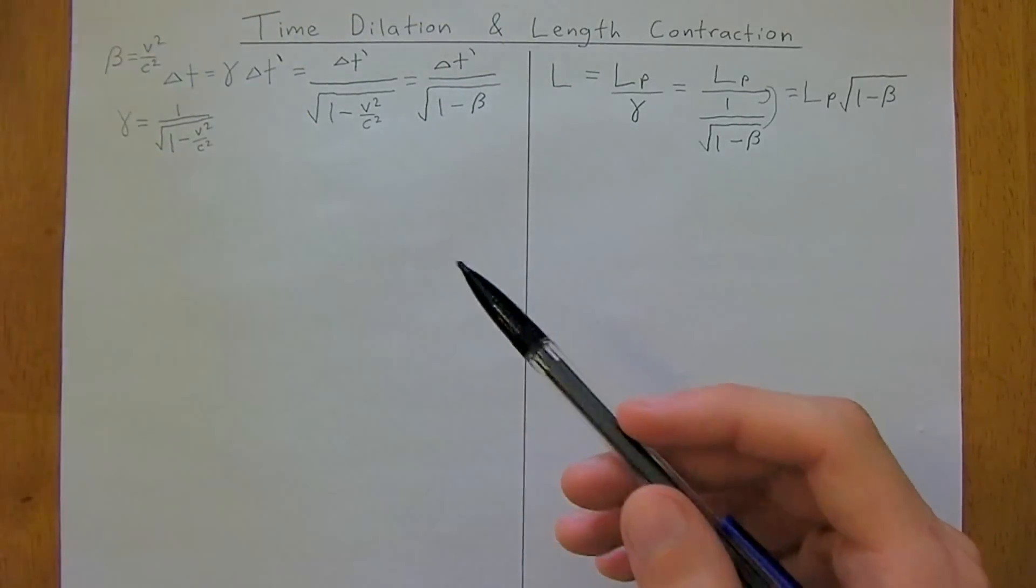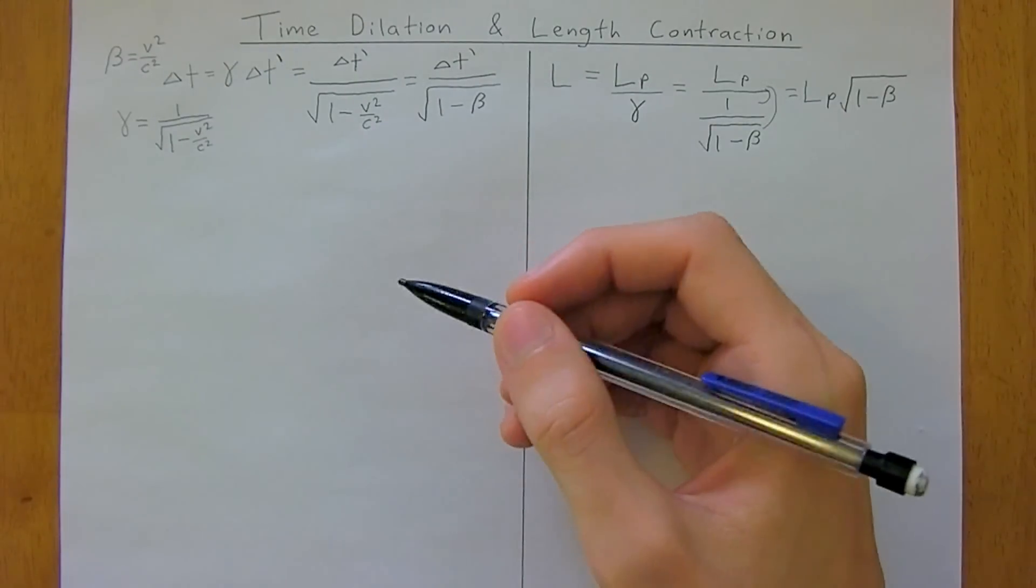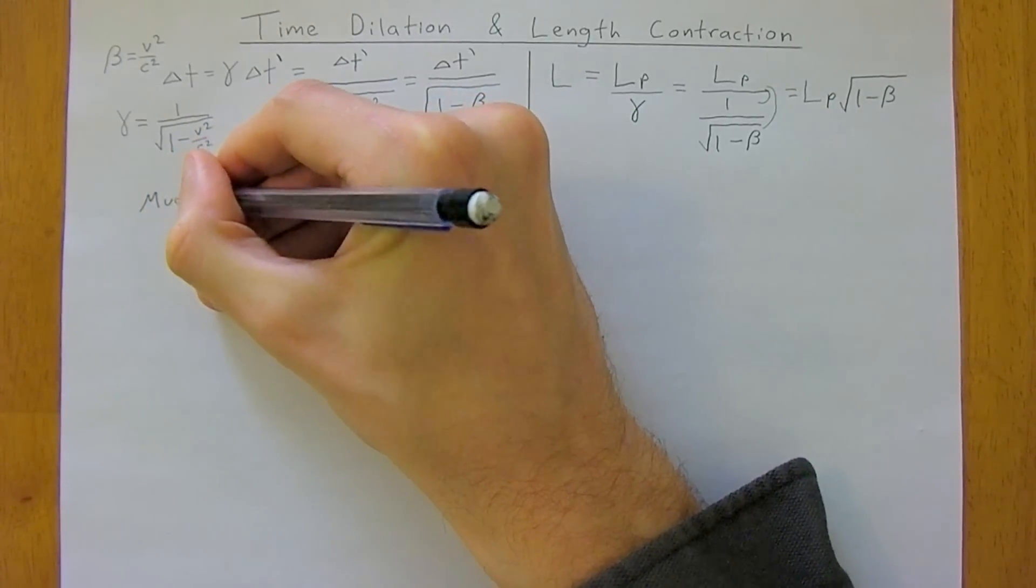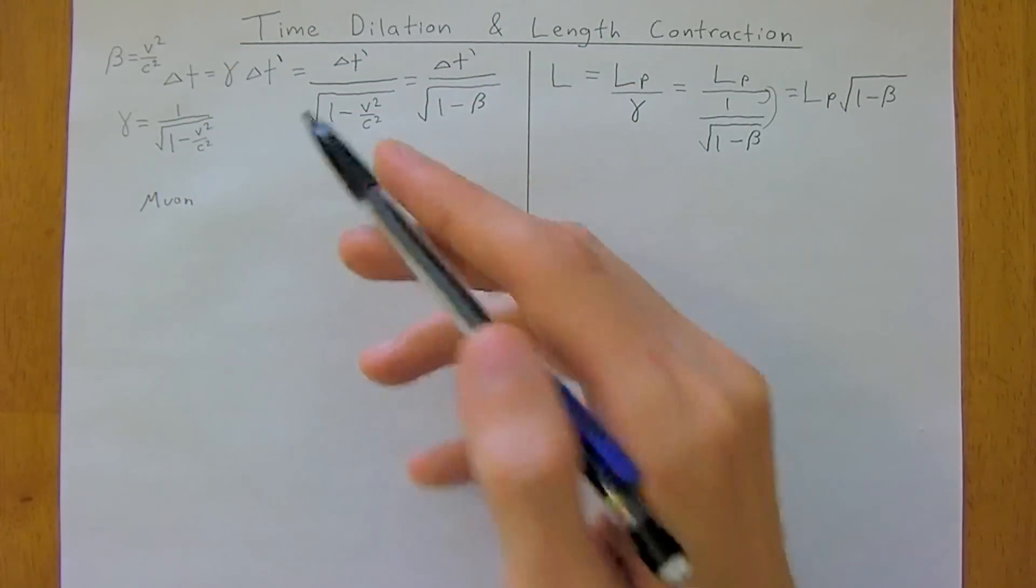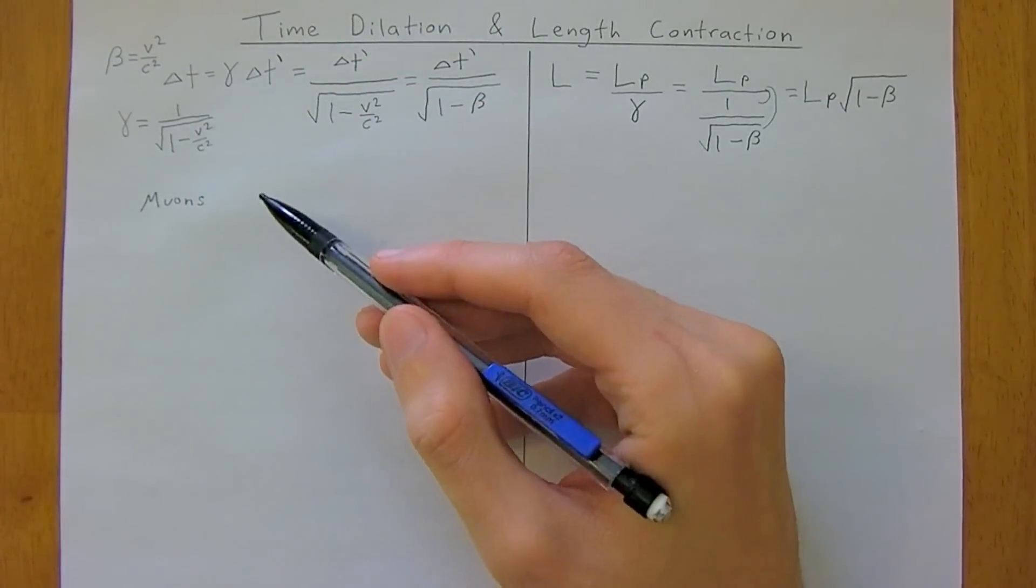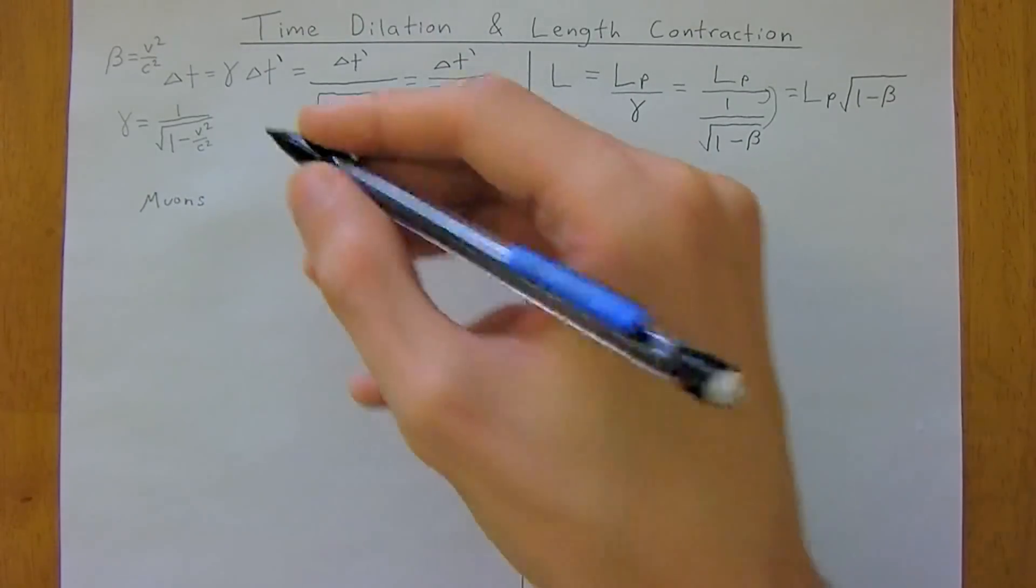So one of the ways they actually measure time dilation is they realize that, working with muons, you've got muons and they're created in our upper atmosphere when photons from the sun hit the upper atmosphere of Earth. And that creates very short-lived muons,